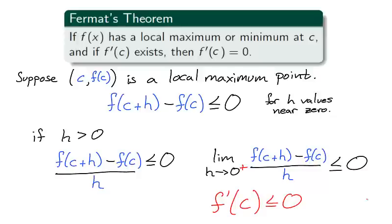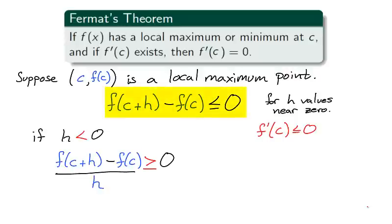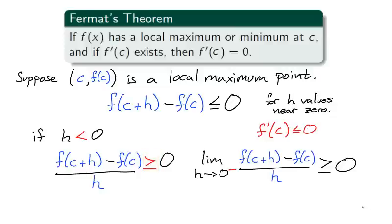Since we are under the assumption that the derivative of f at c exists, it can be at most zero. Going back to the original inequality, if h is less than zero, then dividing by h reverses the inequality, and the limit as h approaches zero from the left is at least zero, which tells us that the derivative of f at c is at least zero.